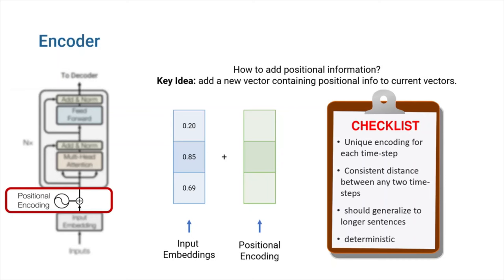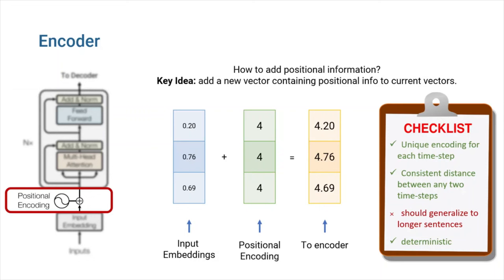A simple solution would be assigning a number to each time step linearly. That is, the first word is given 1, the second word is given 2, and so on. It would provide unique encoding for each time step and consistent distance between any two time steps. It also is deterministic. However, the problem with this technique is that not only may the values become rather huge, but our model could also be confronted with sentences that are longer than those in training. Furthermore, our model may not observe any samples of a given length, which would limit our model's generalization.